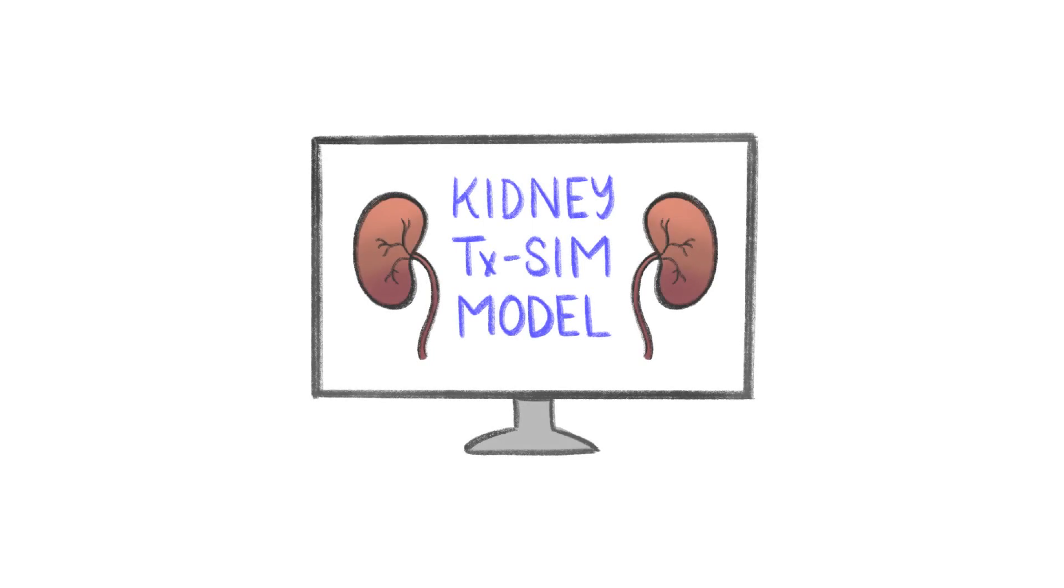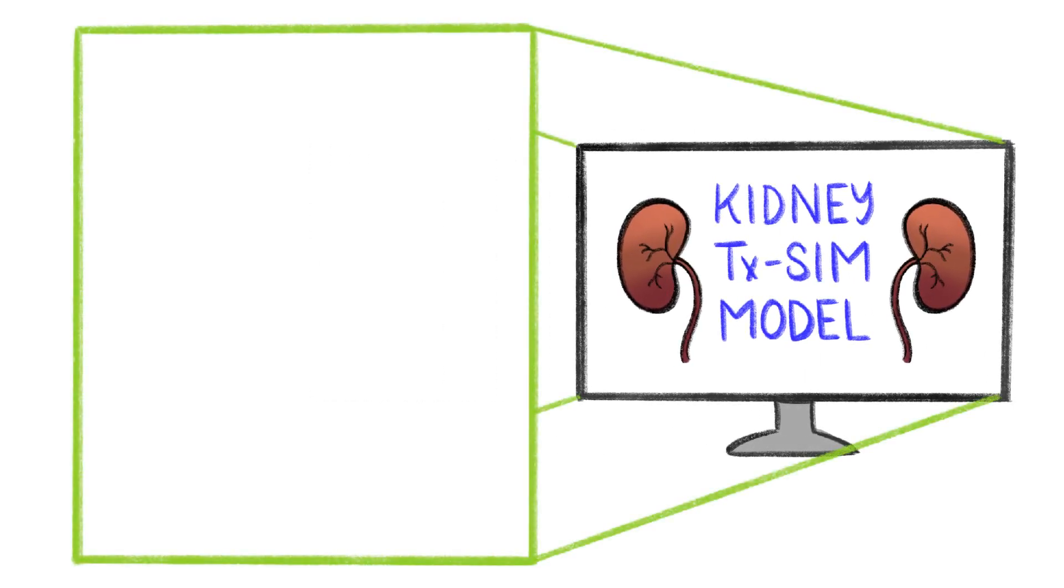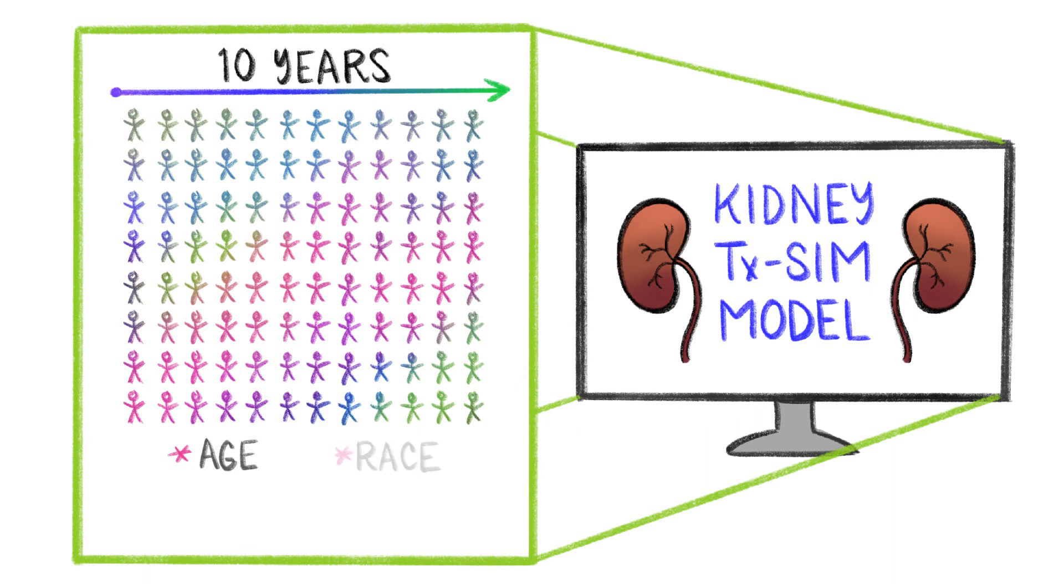The Kidney Transplant Sim model is a discrete event simulation model that helps us compare the two different allocation systems in more detail. It uses anonymous information gathered from real patients and donors over a 10-year period, including things like age, race, and medical history.